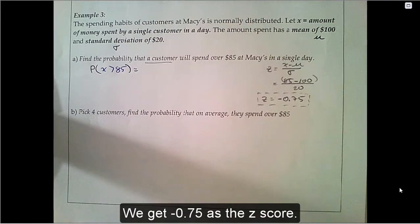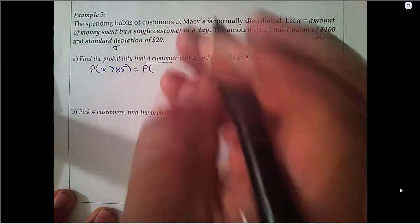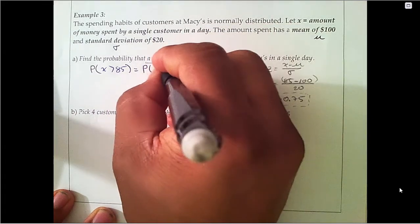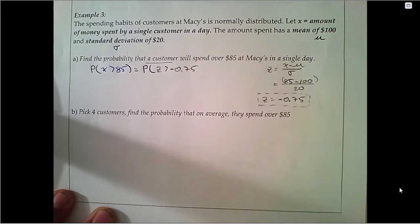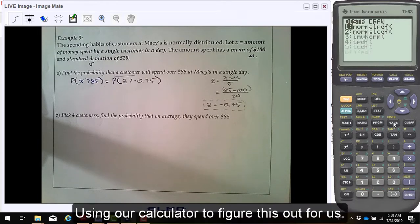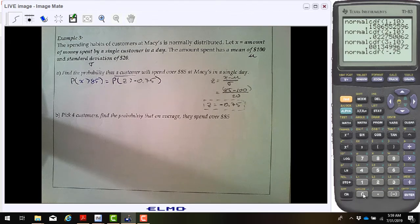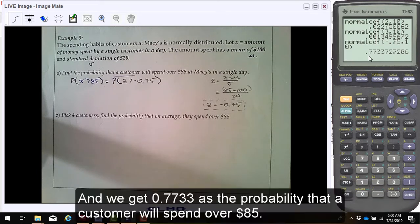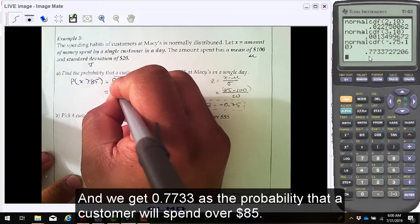We get negative 0.75 as the z-score. Using our calculator to figure this out for us, and we get 0.7733 as the probability that a customer will spend over $85.